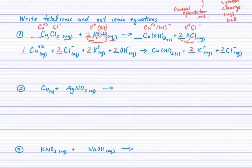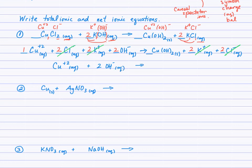For the net ionic equation, cancel the spectator ions and copy down what's left. The 2 potassium and 2 chloride ions are spectators. What remains is: Cu²⁺ plus 2 hydroxide ions forming the copper 2 hydroxide precipitate.